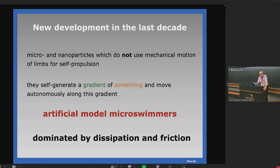The particles themselves generate a gradient of something. I will give you an example later. And then they move autonomously along this gradient since you have a non-equilibrium situation. This brings you to the picture of artificial model micro-swimmers. These are dominated by dissipation and by friction.